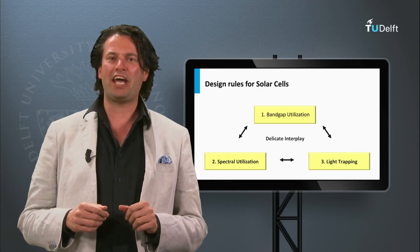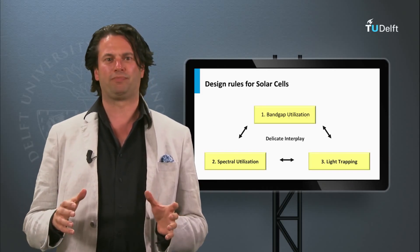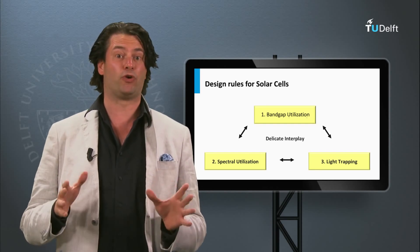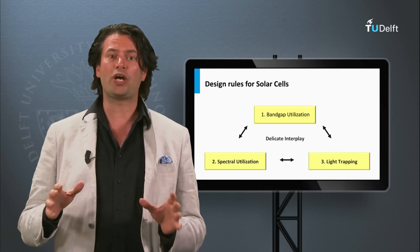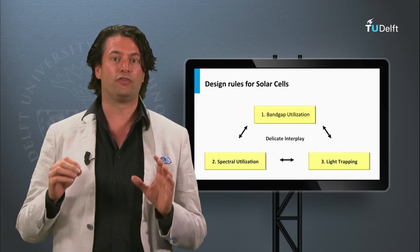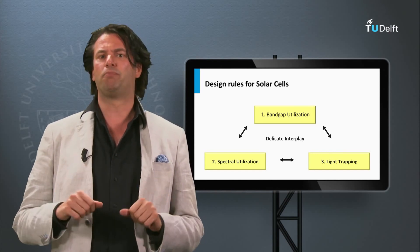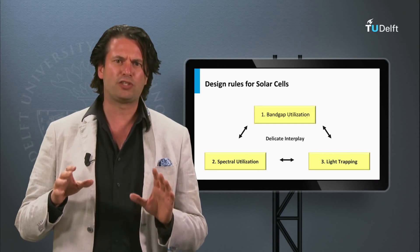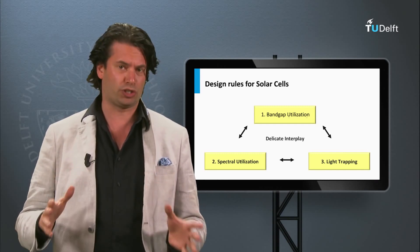In the last two weeks we have discussed the working principle of a solar cell and the external parameters that define the performance of a solar cell. Now we are going to look at how various solar cell concepts and photovoltaic materials affect the performance of a solar cell. For that, we have to look at some general design rules for solar cells.